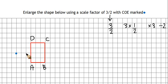Then we'll start with A. That is 3 squares right and 2 squares down. So 3 right, 2 down.